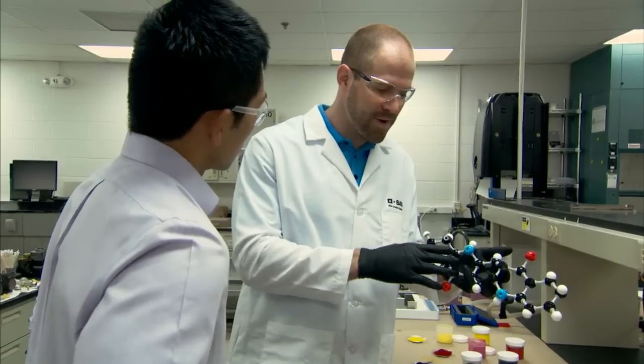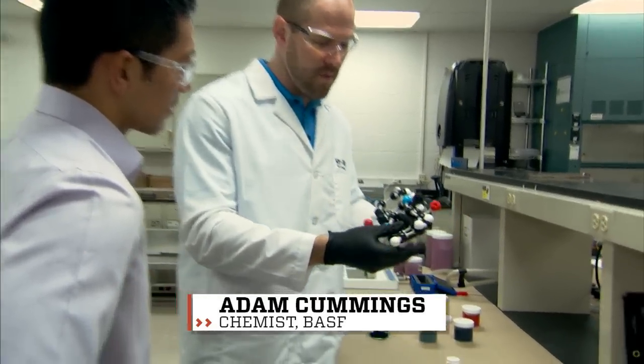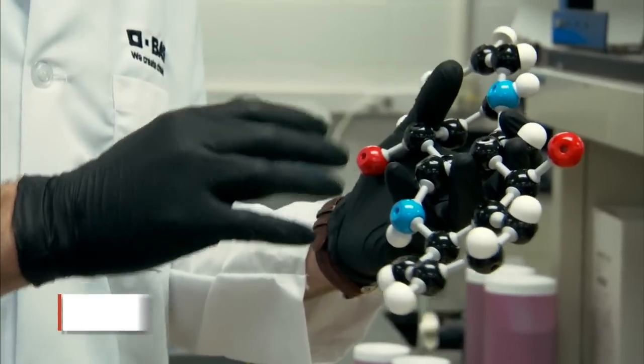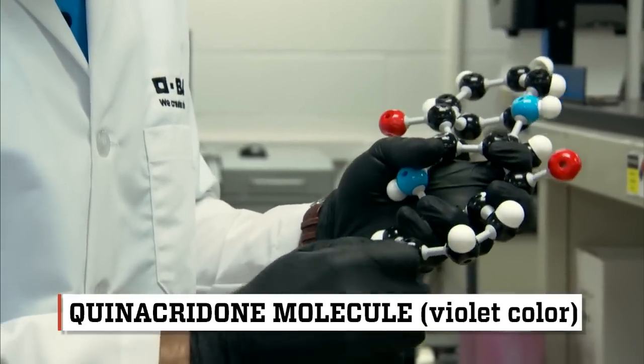This is actually called quinacridone and it's a violet color. And what we might do to create a red color is tweak this molecule a little bit. So say this hydrogen right here, we take off and we add a carbon methyl group to it.